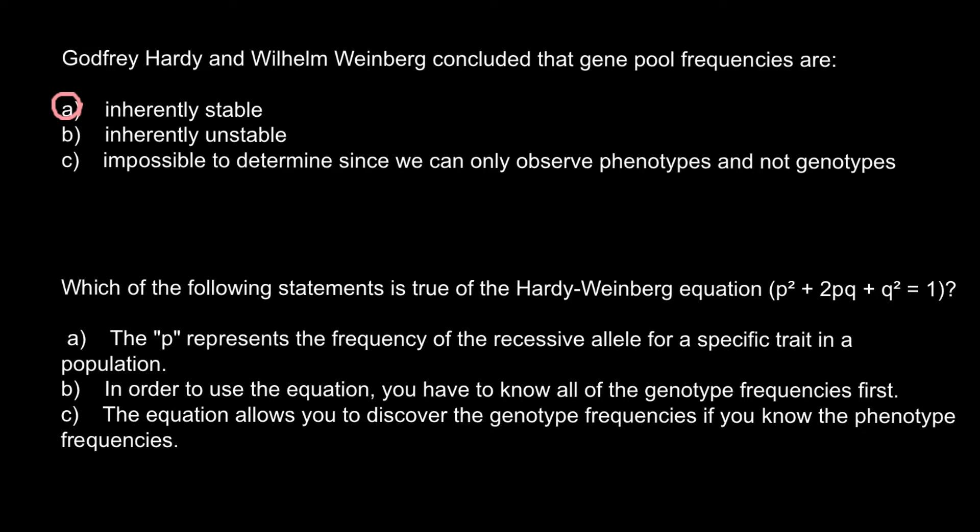Answer A: p represents the frequency of the recessive allele for the specific trait in a population. Answer B: in order to use the equation you have to know all the genotype frequencies first. Answer C: the equation allows you to discover the genotype frequencies if you know the phenotype frequencies.